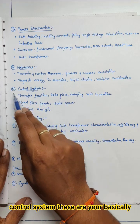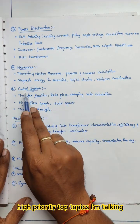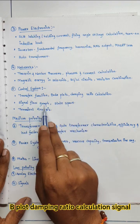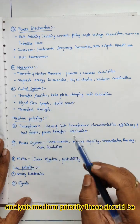From control system, these are your basically high priority topics I am talking about. So control system: transfer function, Bode plot, damping ratio calculation, signal flow graph, state space and transient analysis.